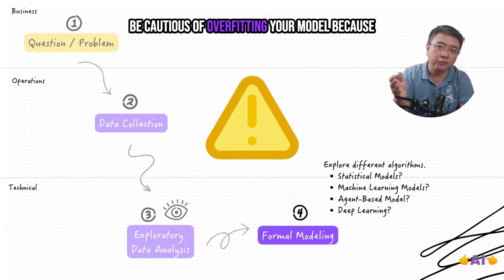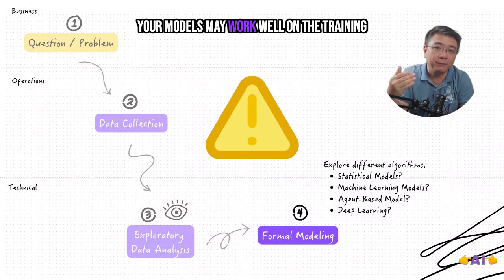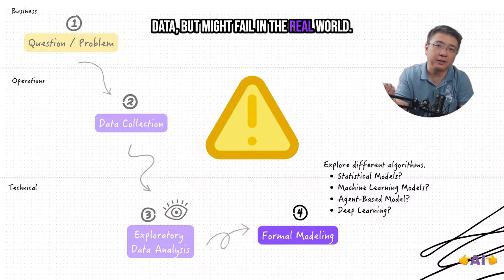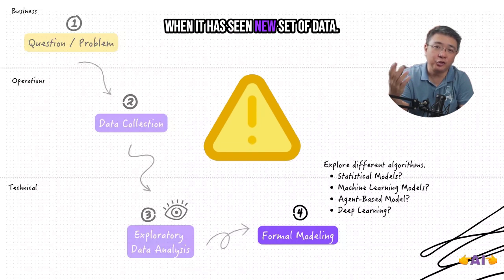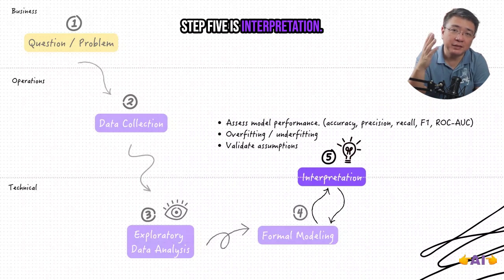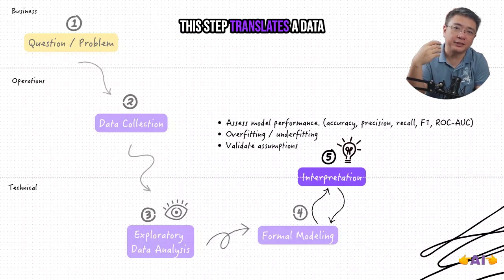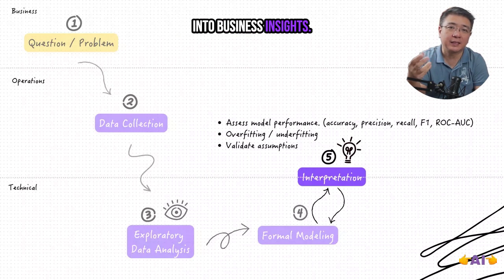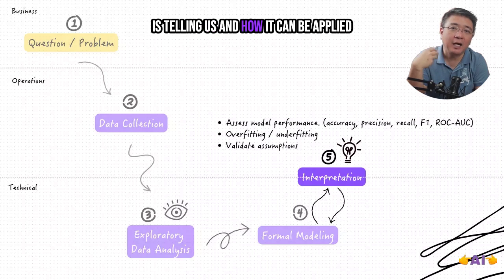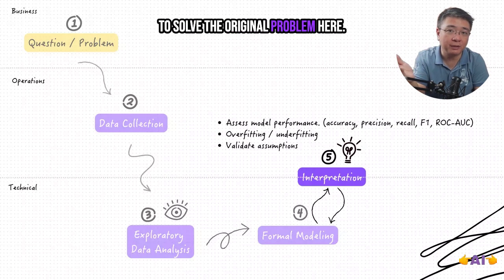Be cautious of overfitting your model. Because your model may work well on the training data but might fail in the real world when it has seen new set of data. Step 5 is interpretation. This step translates the data into business insights. It's about understanding what the model is telling us and how it can be applied to solve the original problem.